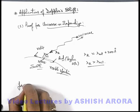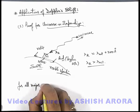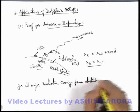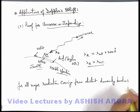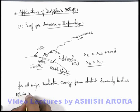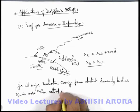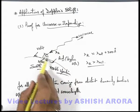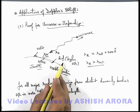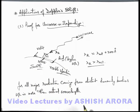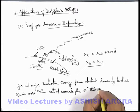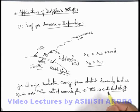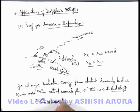So we can say for all major radiation coming from distant heavenly bodies, wavelength is more than the actual wavelength. And when this difference in wavelength is compared on the visible spectrum, the receiving wavelength is displaced towards red light — red wavelength. If actual is synchronized with the mean value or yellow light, then this is called red shift. And red shift implies the source of light is receding away from the observer, and this shows that the universe is expanding.